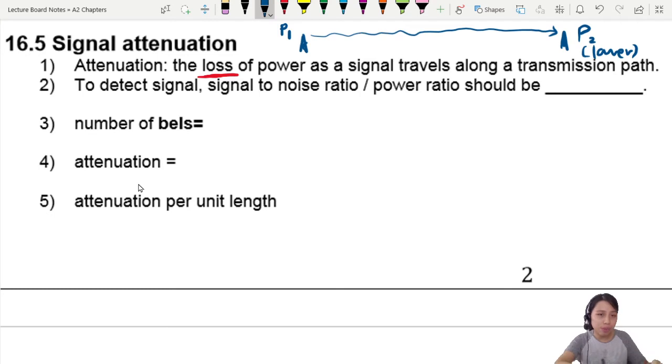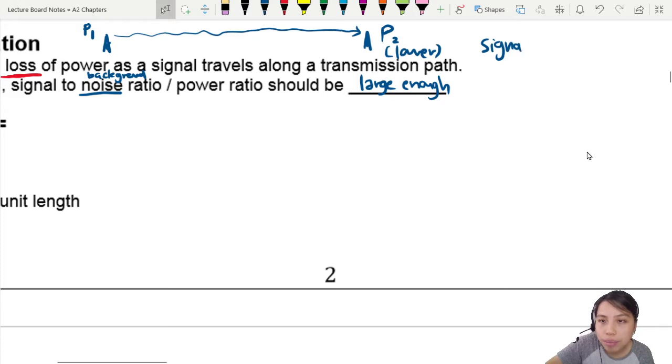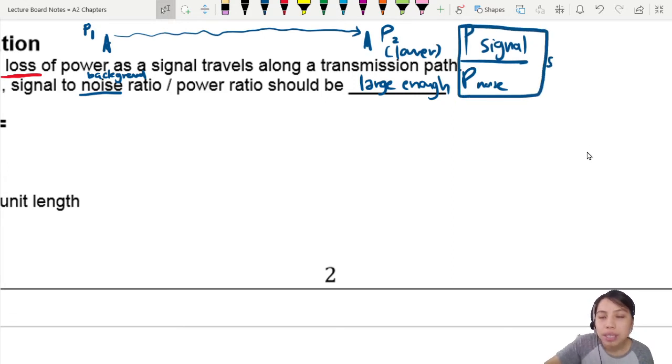To detect the signal in the first place, your signal to noise ratio, noise means background noise or things like that, should be large enough. Otherwise, you won't be able to hear any signal. In order for you to hear something clearly, a signal such as my voice talking to you now, your signal compared to your noise, power of signal over power of noise, should be large enough. That is what this is talking about.